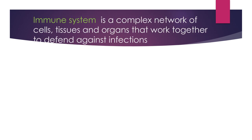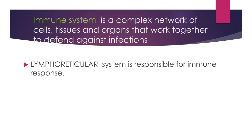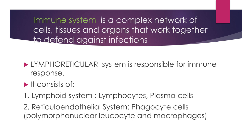The immune system is a complex network of cells, tissues, and organs that work together to defend against infections. Under the immune system, we have to talk about the lymphoreticular system, which is responsible for immune response. It consists of the lymphoid system and the reticuloendothelial system. The lymphoid system consists of lymphocytes and plasma cells, while the reticuloendothelial system consists of phagocytic cells.